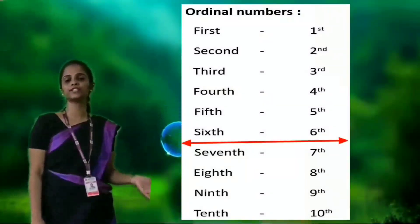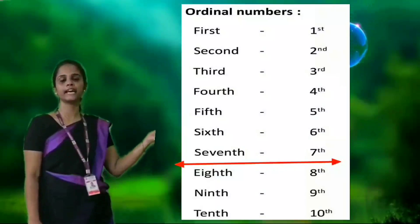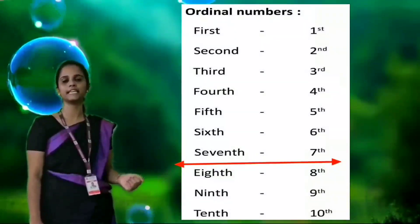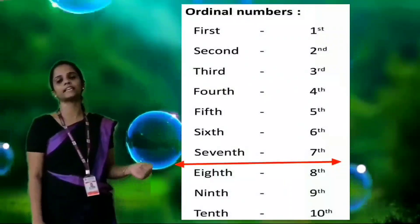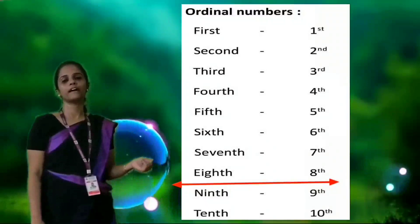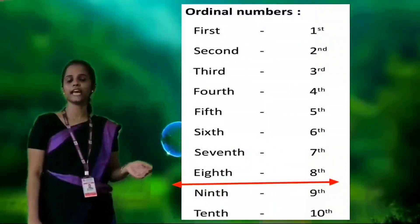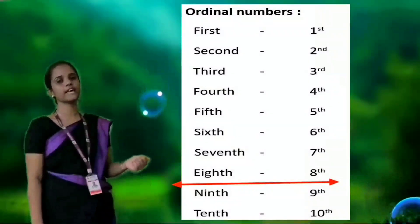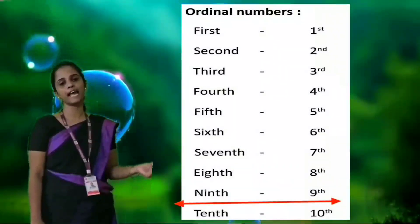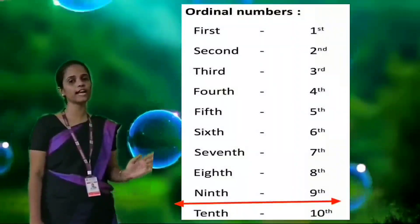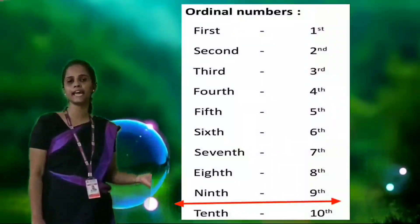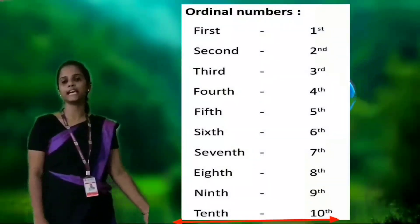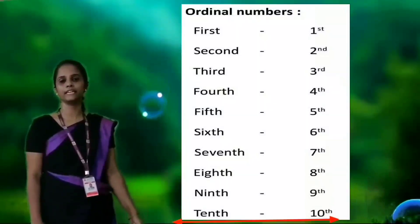Seventh, eighth — write number 7 and T-H on top, number 8 and T-H on top. For ninth, you should write N-I-N-T-H — not N-I-N-E-T-H, that is wrong. Tenth — T-E-N-T-H. Write number 10 and T-H on top.